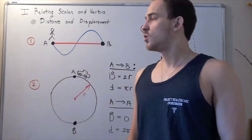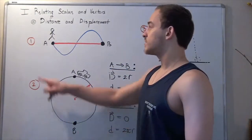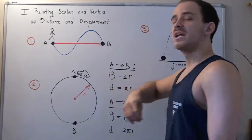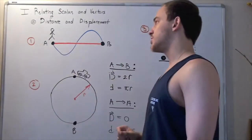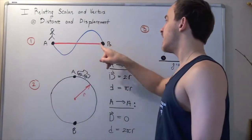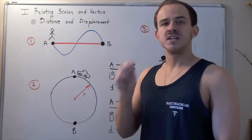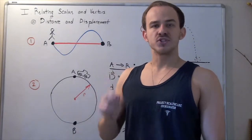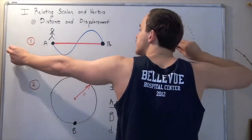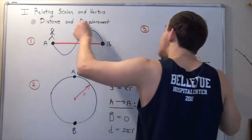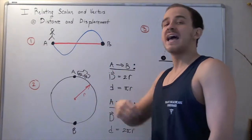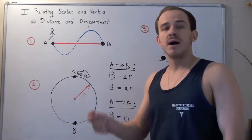Let's look at an example. Suppose we have a person that walks from point A to point B along this blue curved path. What is the displacement of the person, and what is the distance the person walks going from point A to point B? Well, the distance represents the actual pathway that the person took — if we take this blue curve and outstretch it into a straight line and measure it, that represents the distance traveled.